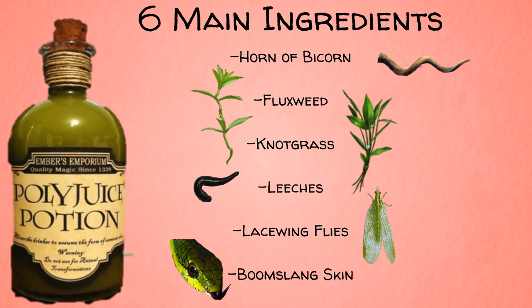I'm going to explain to you the reason behind JK Rowling's choice for each of the ingredients of the Polyjuice Potion, and hopefully by the end of this video you can see just how much research JK Rowling puts into the development of not just the characters of Harry Potter but also the magical items and potions as well. So let's look at the six main ingredients: Horn of Bikorn, Fluxweed, Knotgrass, Leeches, Lacewing Flies, and Boomslang Skin.